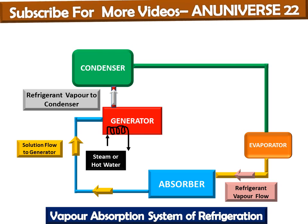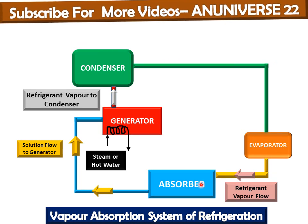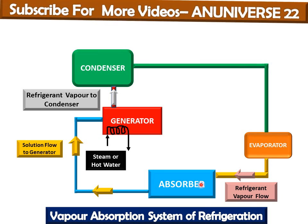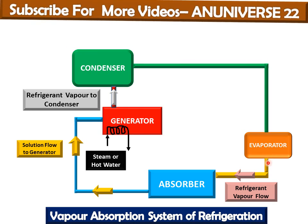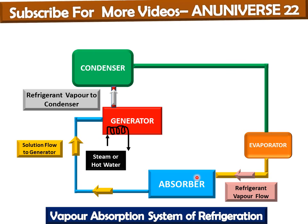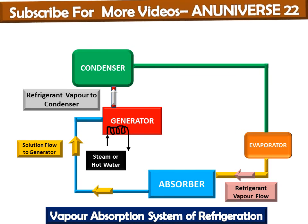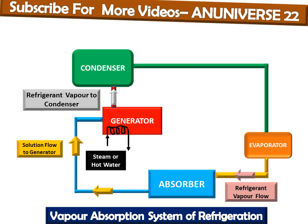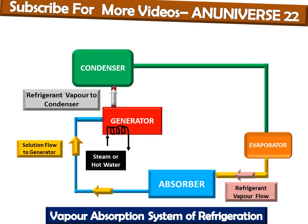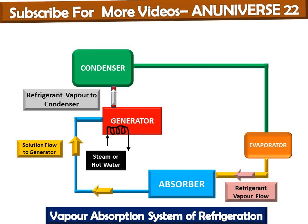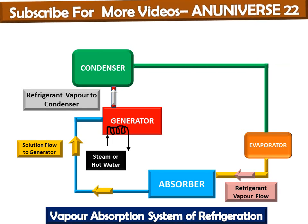The evaporator and absorber are interconnected. The refrigerant vapor formed in the evaporator is absorbed by the absorbent in the absorber — water acts as the absorbent. Due to the strong affinity of the absorbent for the refrigerant, it maintains the refrigerant vapor pressure in the evaporator at the low level required for continuous vaporization of liquid refrigerant to obtain refrigeration.